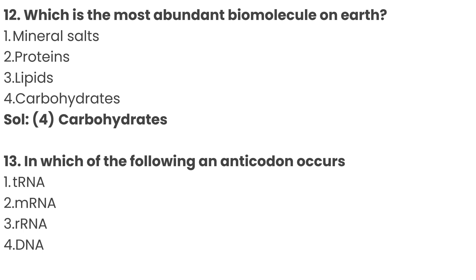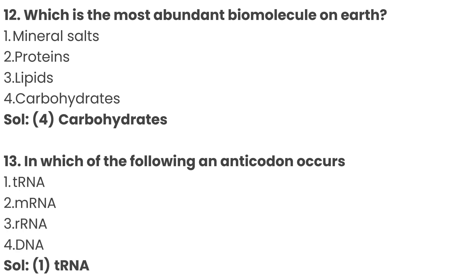Question number 13: in which of the following does an anticodon occur? Option 1: tRNA, Option 2: mRNA, Option 3: rRNA, Option 4: DNA. The correct answer is Option 1: tRNA.